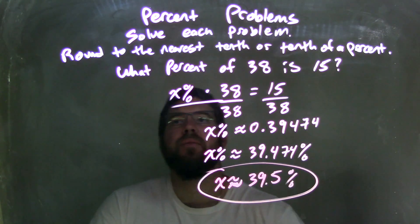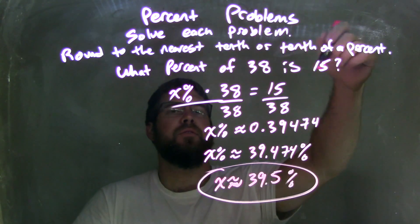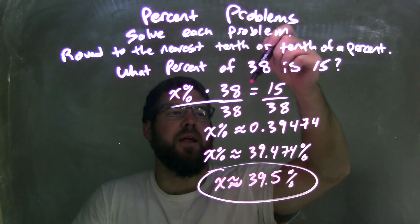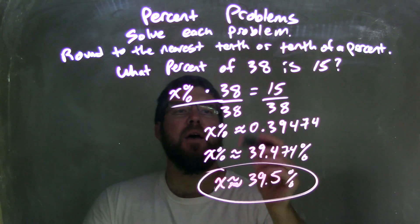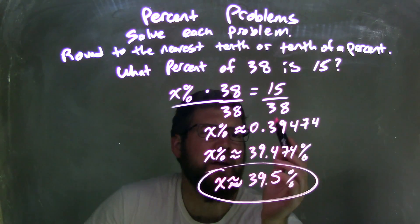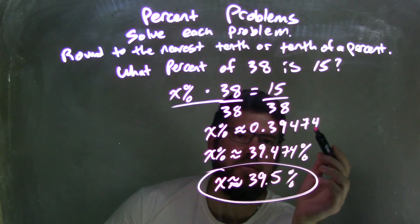So let's recap. We were given the question: what percent of 38 is 15? So x percent, what percent we don't know, times 38, of 38, is equal to 15. I then solve it, divided by 38 to both sides, giving me x percent. It's approximately equal to a decimal, which we use my calculator. 15 divided by 38 to be 0.39474.